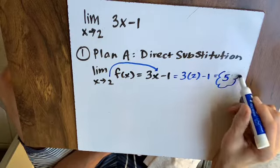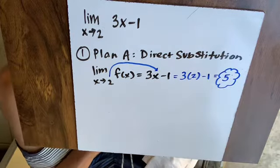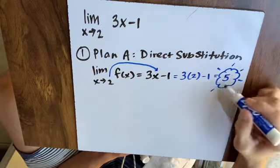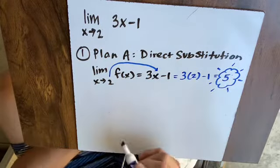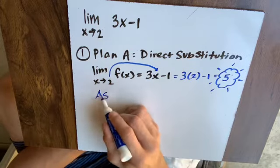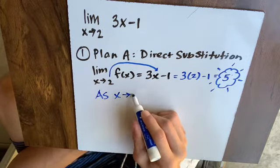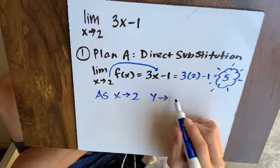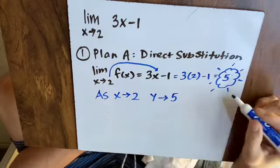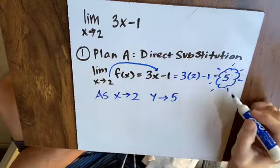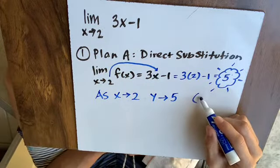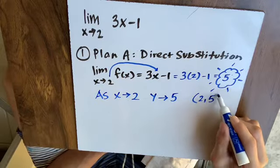So the problem with this is if I do this and you say, well, the limit is 5, you might have no idea what we're talking about. What this means is as x goes towards 2 from both sides, y is trending towards 5. And if you can find the limit from direct substitution, it means we say the limit is reached and you actually have a point at 2, 5.